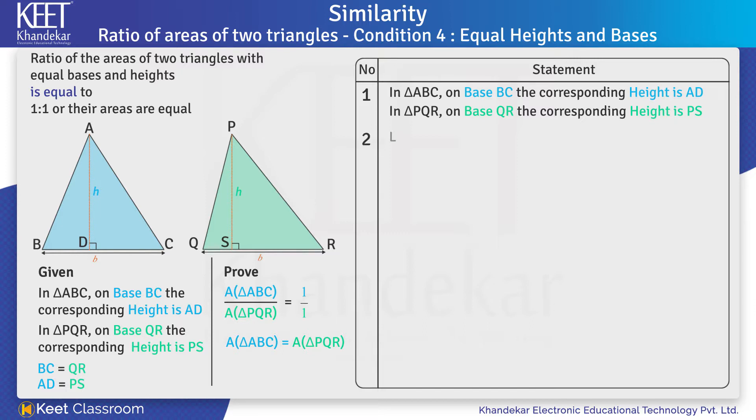In Step 2, let base BC equals base QR equals B. Let height AD equals PS equals H. We know that the formula for area of triangle is equal to half into base into height.